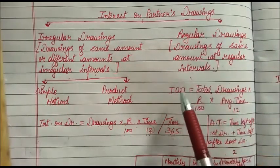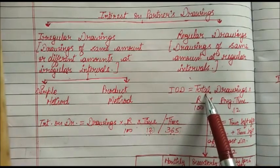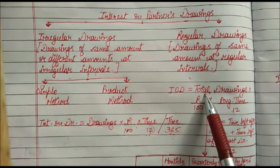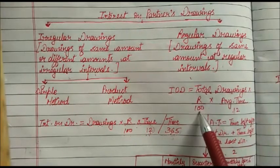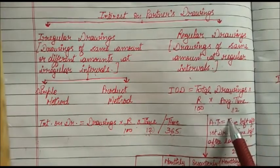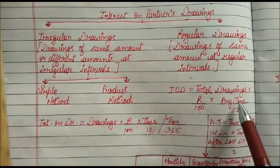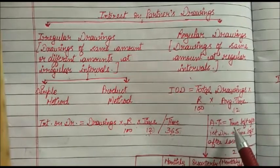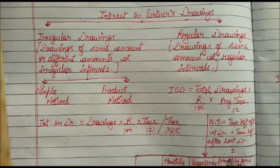Now we come to the calculation of interest on drawings for regular drawings. The formula is: Interest = Total Drawings × Rate/100 × Average Time/12. Total drawings — for example, if the partner withdraws ₹2,000 per month for one year, total drawings = 2,000 × 12 = ₹24,000. In irregular drawings we used actual time, but in regular drawings we use average time. Average time = (Time left after first drawing + Time left after last drawing) ÷ 2.